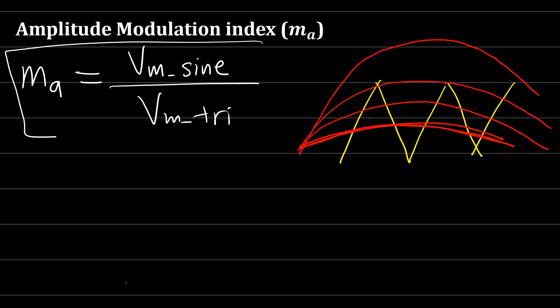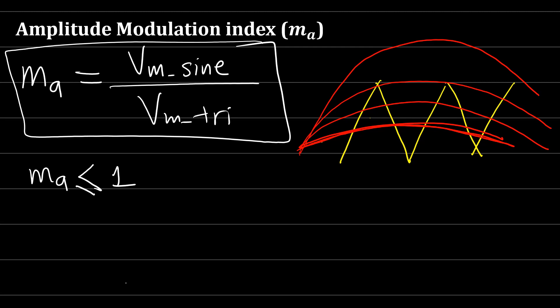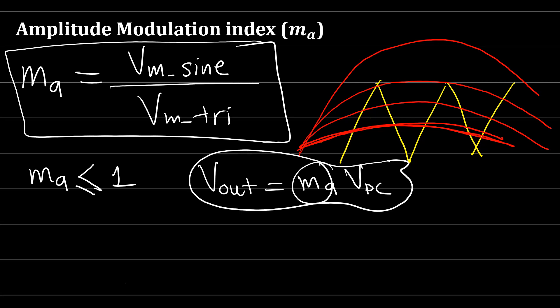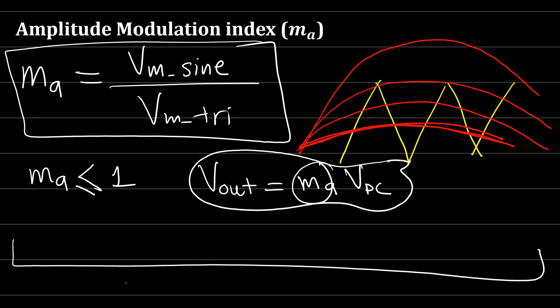If ma equals one, both waves have the same amplitude. Typically ma is set less than one, often 0.8 or 0.9. When ma is less than or equal to one, the amplitude of the fundamental output voltage is linearly proportional to ma, so V_out = ma × V_DC. If ma is greater than one, the output amplitude increases with ma but no longer linearly, and harmonics also increase.